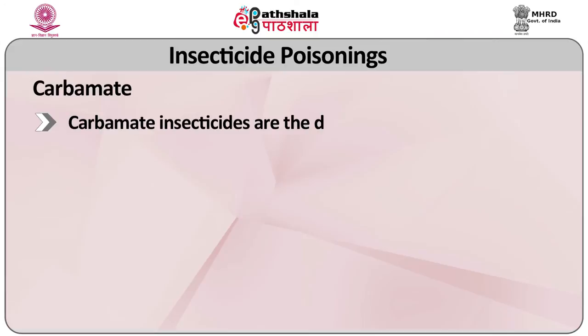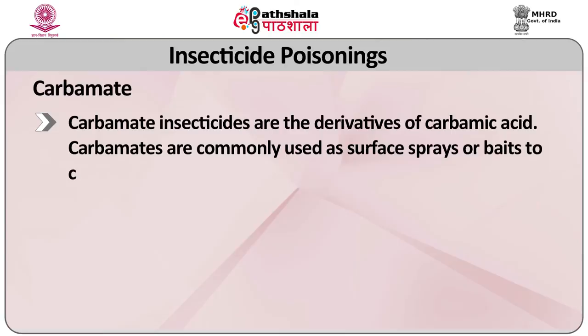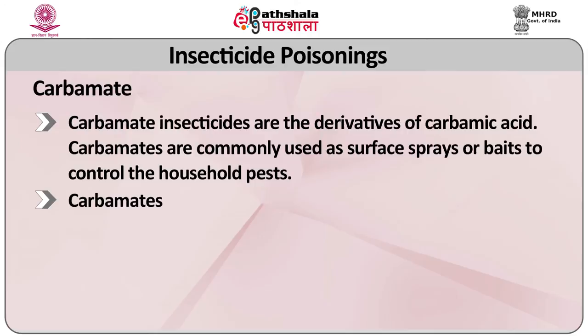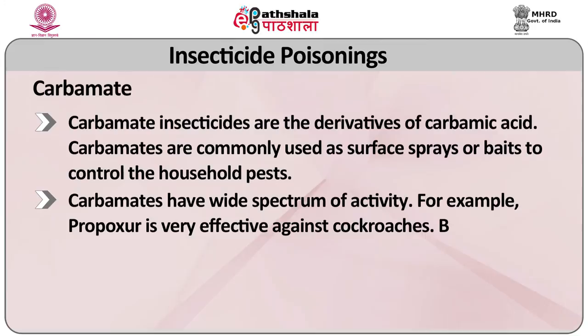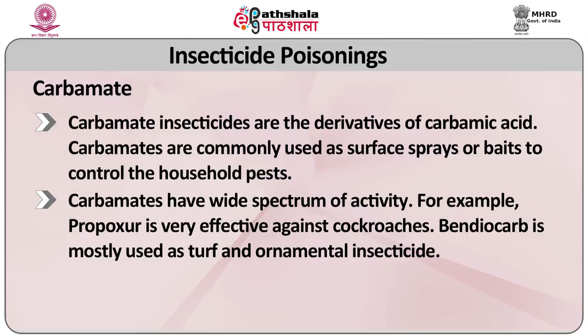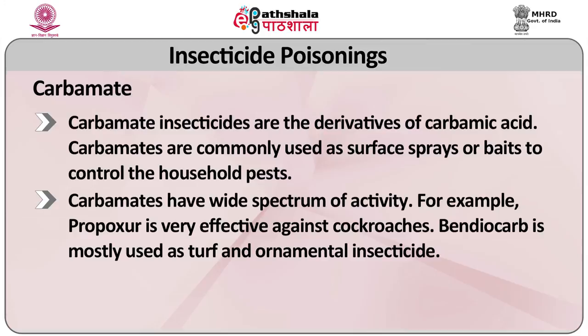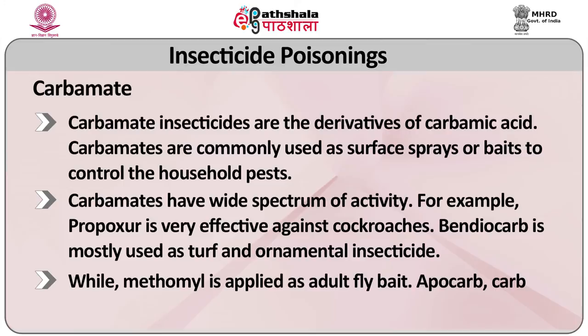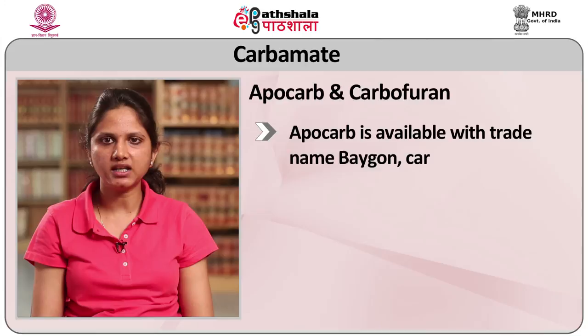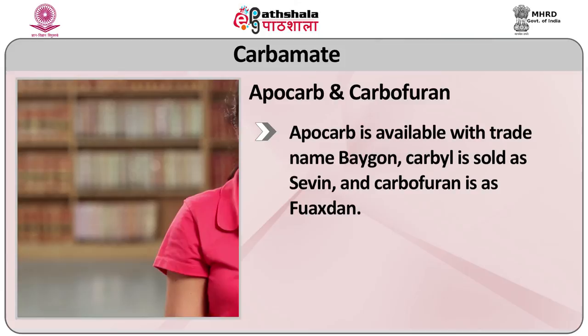The third category is carbamates. Carbamate insecticides are derivatives of carbamic acid and are commonly used as surface sprays or baits to control household pests. Carbamates have a wide spectrum of activity — for example, Propoxur is very effective against cockroaches, Bendiocarb is mostly used as a turf and ornamental insecticide, and Methomyl is applied as an adult fly bait. Aldicarb, carbaryl and carbofuran are other carbamates available in markets. Aldicarb is available with the trade name Baygon; carbaryl is sold as Sevin and carbofuran as Furadan. The mode of action of carbamate insecticides is very similar to that of the organophosphate insecticides, as they inhibit the activity of cholinesterase enzymes. However, organophosphorus compounds differ from carbamates in that carbamates themselves hydrolyze from the cholinesterase enzyme site.